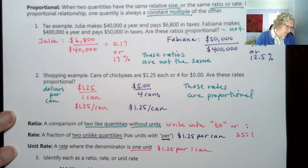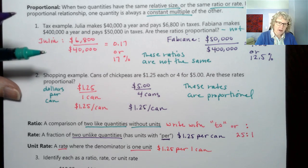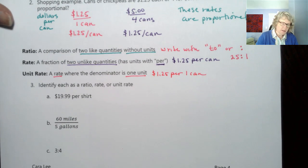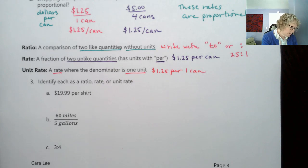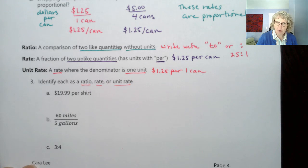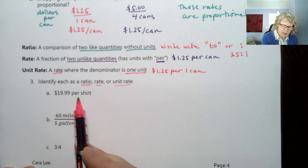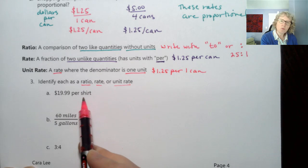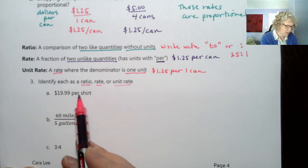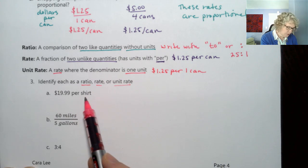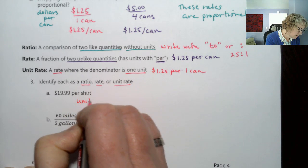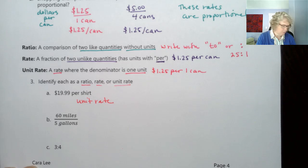So that's what each of those specifically means. Now let's identify, I've got some different things here. Let's identify which these are. Identify each as a ratio, rate, or unit rate. If you want to just do this real quickly, pause it, and then come back. You're welcome to do that. So $1.99 per shirt. So this is per one shirt. And I see the per, so I know it's a rate. So it's either a rate or a unit rate. And since it's per one shirt or each shirt, this is a unit rate. So if you said that, great job.